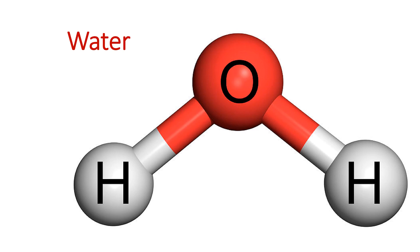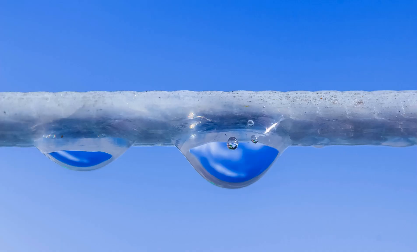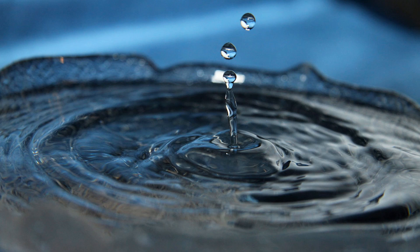Atoms come together to form chemical compounds — substances consisting of two or more elements combined in a fixed proportion. The atoms are held together by bonds, like strong covalent bonds or weak ionic bonds. The numbers of atoms and their elements in a molecule can be written as a chemical formula. For example, water is H2O because it has two hydrogen atoms for every one oxygen atom. Pure water will always have two hydrogen atoms for every one atom of oxygen.